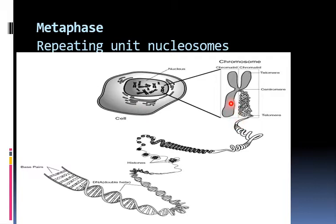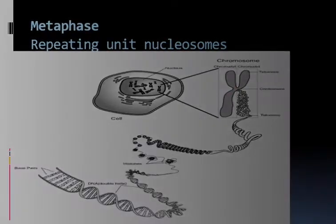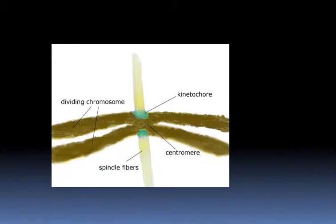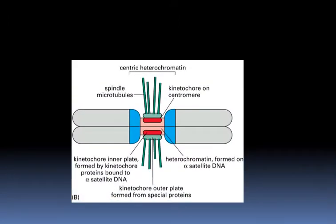The metaphase chromosome consists of two chromatids attached to each other by a centromere, also called the kinetochore. The terms centromere and kinetochore are frequently used interchangeably. Microscopically, the kinetochore is a trilaminar structure attached to the chromatin at the inner layer and to the microtubules of the spindle at the outer layer.